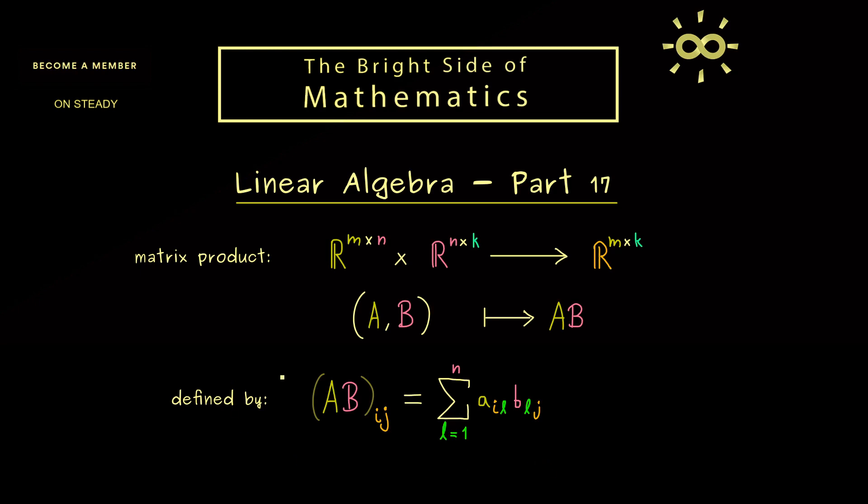There again you see it's needed that we have the same number n here. Then in summary you see this is the formula you can remember for the matrix product. So we sum over the index in the middle, it vanishes in some sense and what remains are the outer indices.